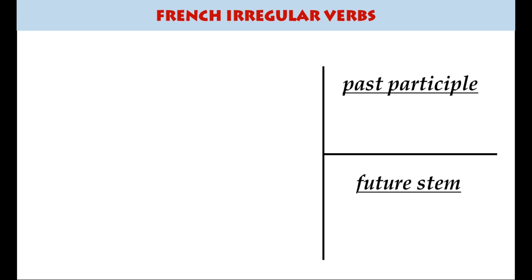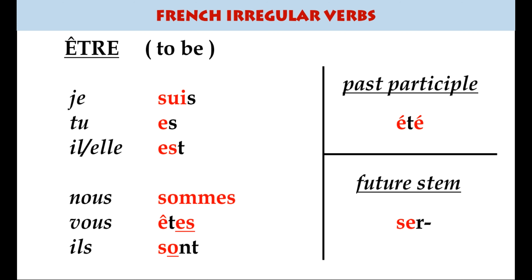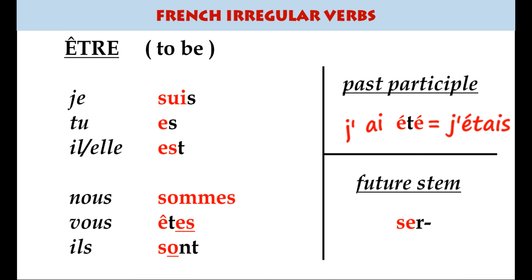And in top position of awkwardness, être: je suis, tu es, il est, nous sommes, vous êtes, ils sont. The past participle is été, but it takes avoir — j'ai été, I have been — though in French you'd more likely use the imperfect j'étais. The future stem is je serai, tu seras, il sera — very odd.